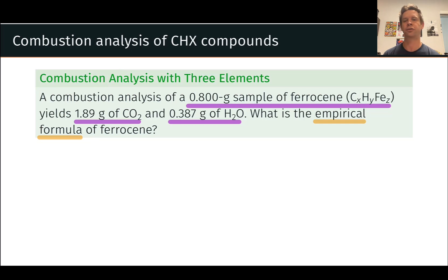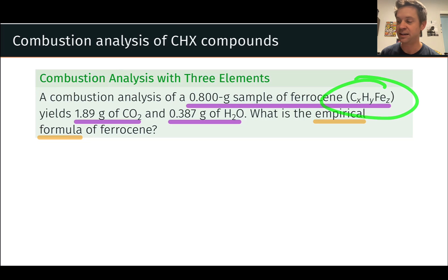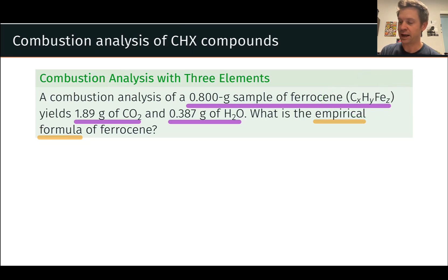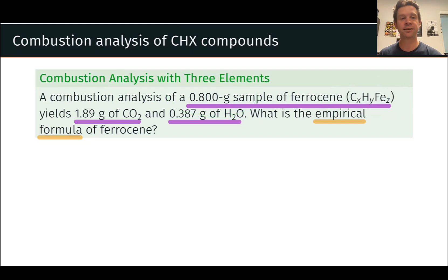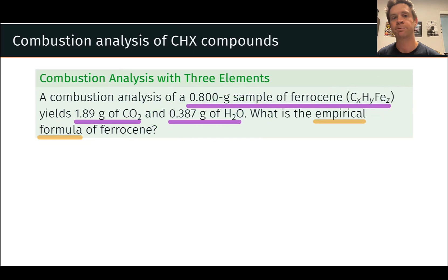This particular problem concerns the compound ferrocene, which is a compound of carbon, hydrogen, and iron. We can think of the general empirical formula here as CxHyFez. We have a 0.8 gram sample of this material, and we combust it. The combustion yields 1.89 grams of carbon dioxide and 0.387 grams of water. The problem says nothing about the fate of the iron, and the iron may well be chemically transformed during the combustion process as well.